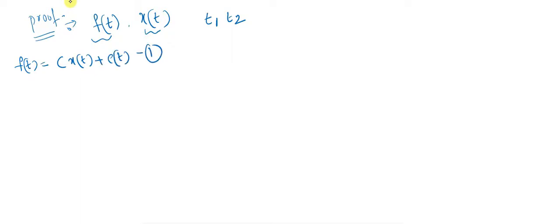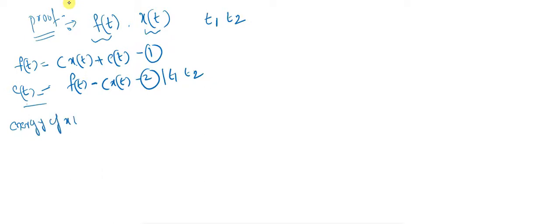We will add c and multiply. e of t is equal to f of t minus c into x of t. This is the second equation. Now, the error will be minimized over intervals t1 to t2 — directly minimized. The noise will be removed with the concept of error energy signal. Let's assume the energy of x of t. Let e_e equal the integral from t1 to t2 of e squared of t dt. This is the third equation.